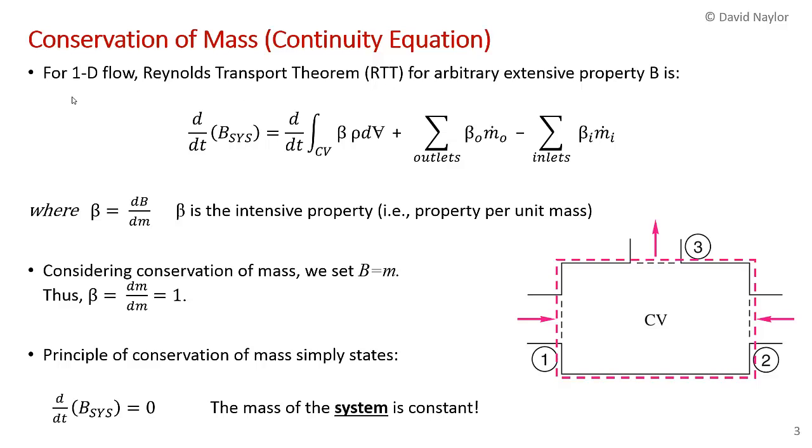In the previous video, we spent substantial time deriving Reynolds transport theorem with a focus on one-dimensional flows. I've rewritten here Reynolds transport theorem for a one-dimensional flow for this arbitrary extensive property B. Remember, an extensive property is a property that depends upon the mass or extent of the system. The rate of change of B within the system—the fixed amount of mass passing through the control volume—equals the rate of change of B within the control volume plus the rate at which B flows out minus the rate at which B flows in. This property beta here is the intensive property, the corresponding intensive property, defined as dB/dm.